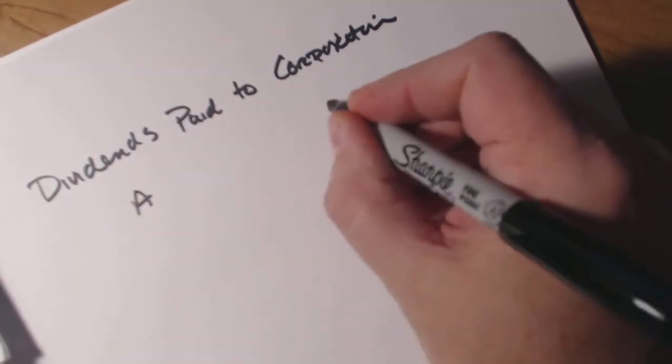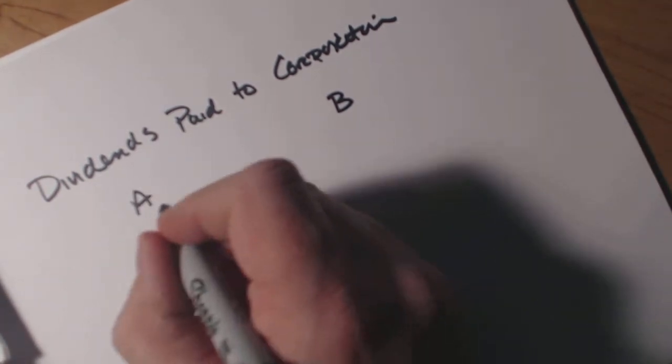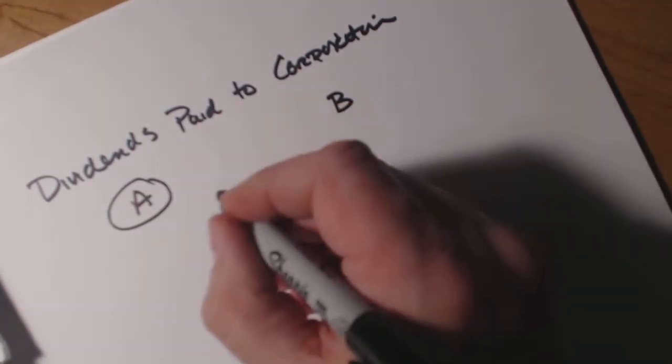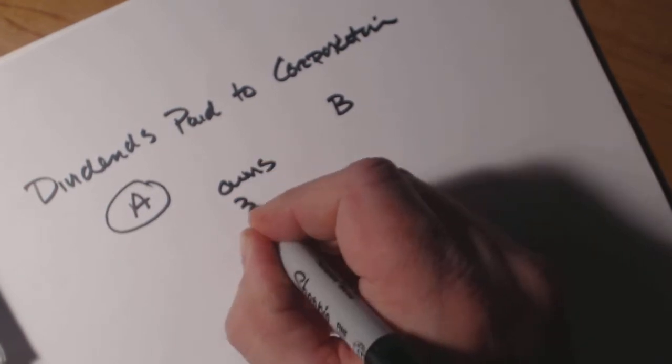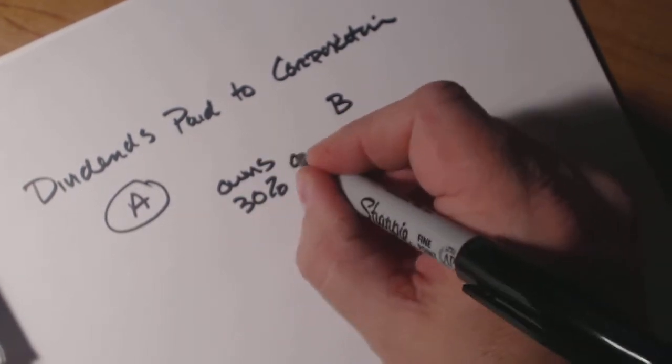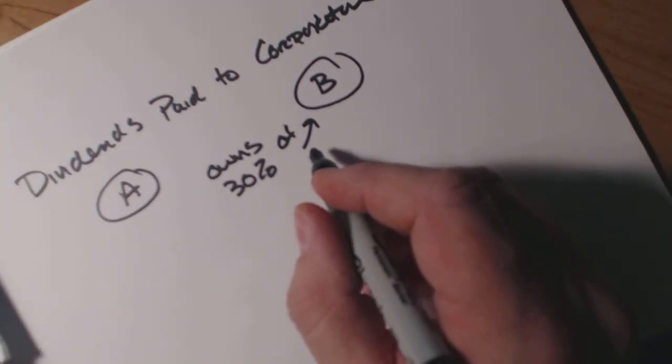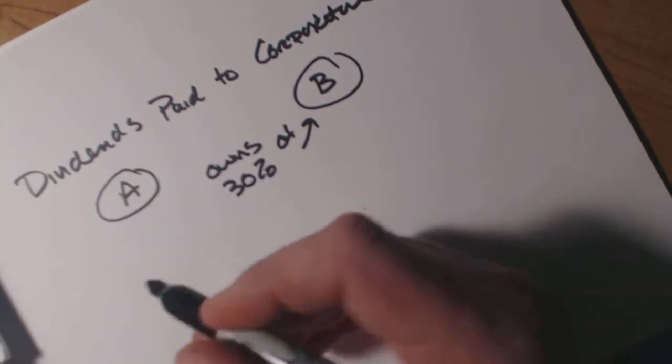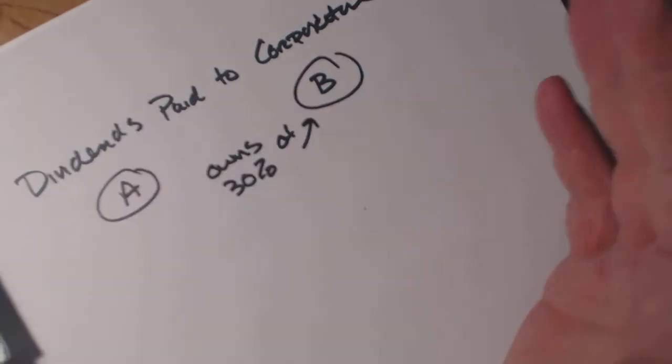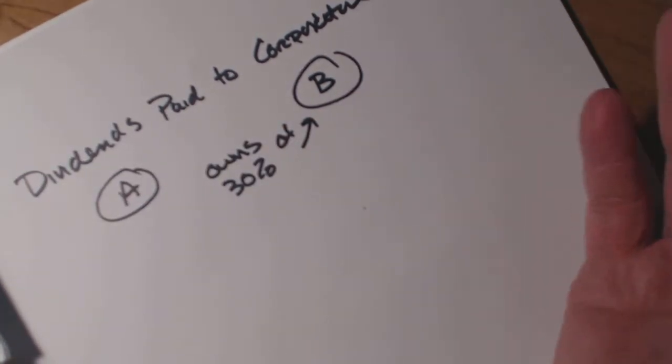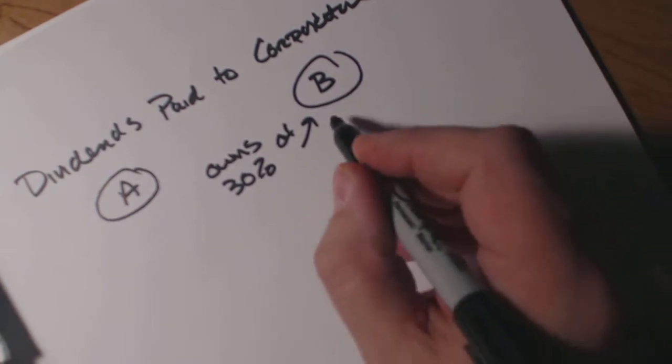We have Company A and Company B. Company A owns 30% of Company B, which means they own 30% of the stocks. And what that also means is that they would also receive a percentage of the income that Company B pays out as dividends.